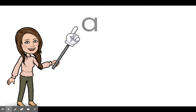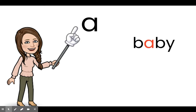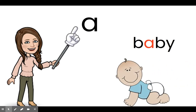We can also get the long A sound with just the letter A. Here's the word baby. You hear A in the word baby. The A just stands alone in the word baby. That's another word pattern for the long A sound: A.